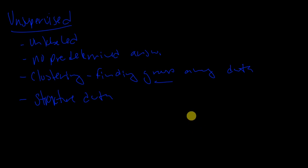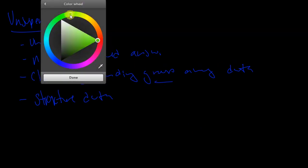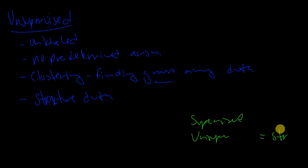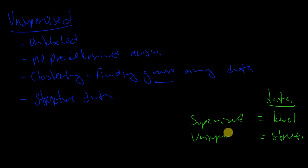To summarize: unsupervised is based on the structure of the data, and supervised is based on the labeling of the data. All we're doing is classifying in a categorical sense the different data we're playing with. That's just what I want you to think of in regards to supervised vs. unsupervised — the different words that come to mind when you're thinking of each.